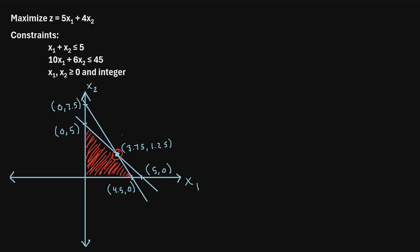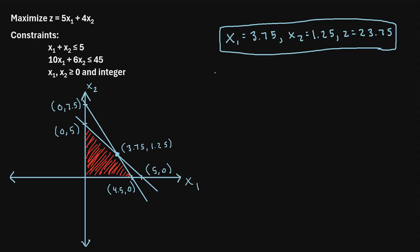So if we relax the constraint that x1 and x2 need to be integers, the optimal solution to this problem is x1 equals 3.75, x2 equals 1.25, and when x1 and x2 take on those values, z turns out to be 23.75.